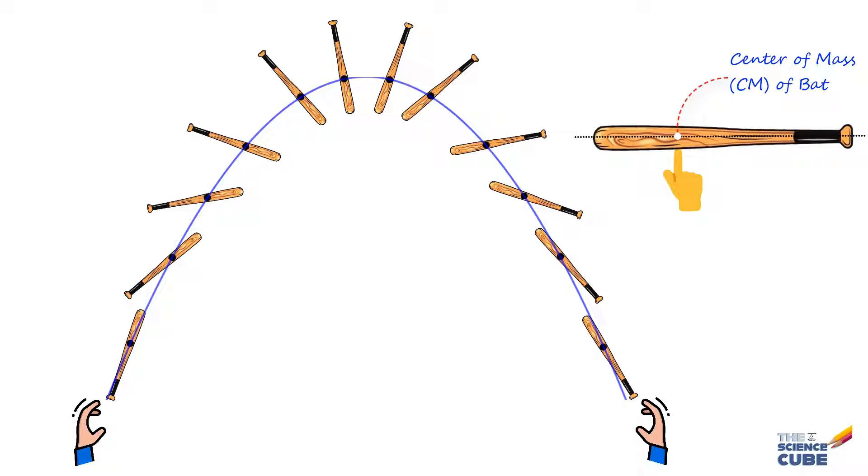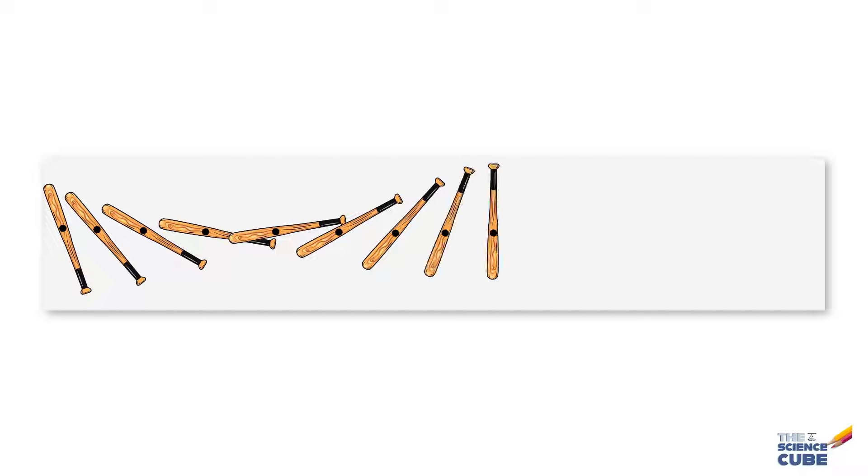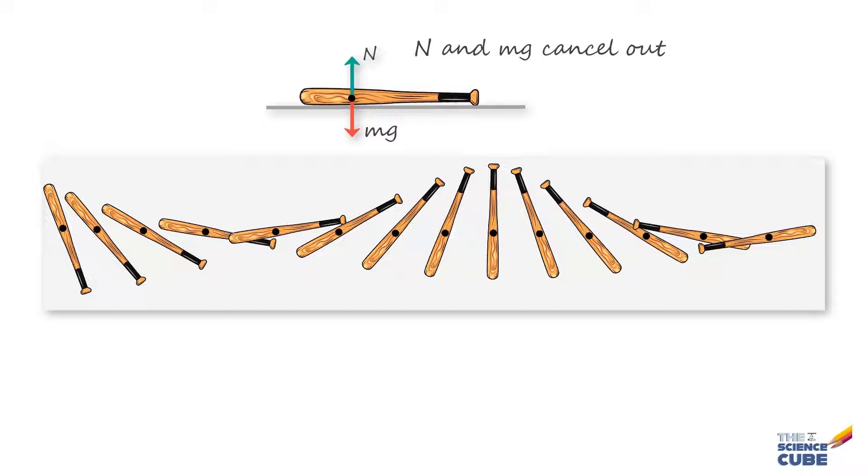Now, here since the bat is moving under the force of gravity or an external force, you got a parabolic path. But if you had spun the bat on a long horizontal table where the net force on the bat is zero, the center of mass would have moved along a straight line. So you see, if we can define the center of mass of a system of particles, like this bat, we can actually predict the possible motion of the system by assuming the mass is concentrated at the center of mass.